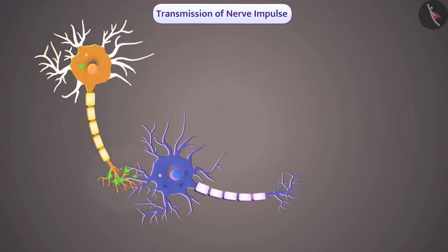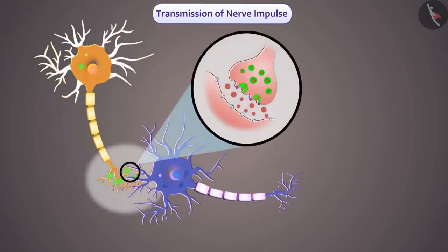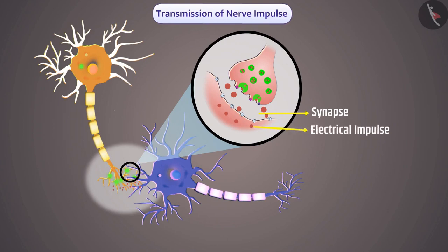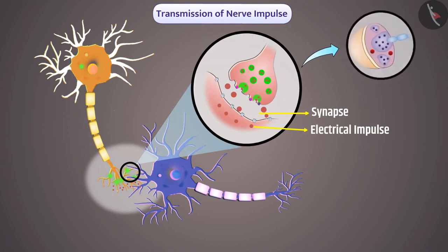At the end of the axon, it causes the release of chemicals called neurotransmitters. Neurotransmitters travel through the space between two neurons called the synapse, transferring information to the dendrites of the next neuron, where it gets converted back into an electrical impulse. This is how a nervous impulse travels through the nervous system.